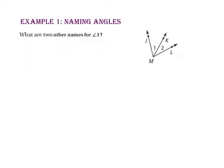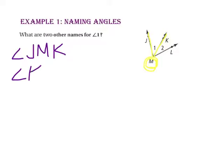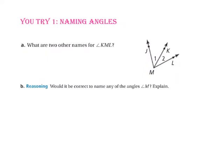Example 1 asks: what are two other names for angle 1? Note we cannot use the vertex letter this time because the vertex is shared by three angles — the largest one, angle 1, and angle 2 all have M as its vertex letter. So we're going to use point J, the vertex letter M, and point K for one way to name angle 1. The second way would be to go backwards and call this angle KMJ. Now pause the video and do you try number 1.